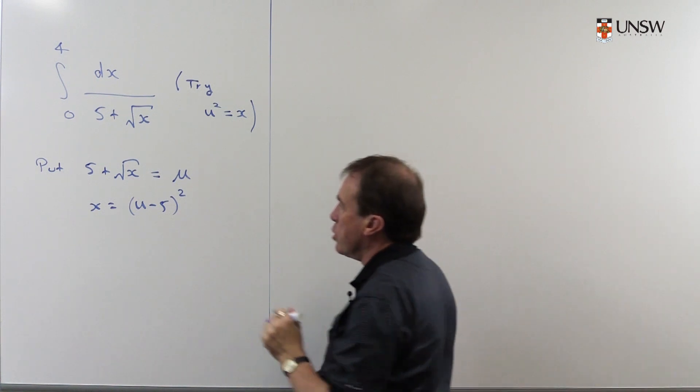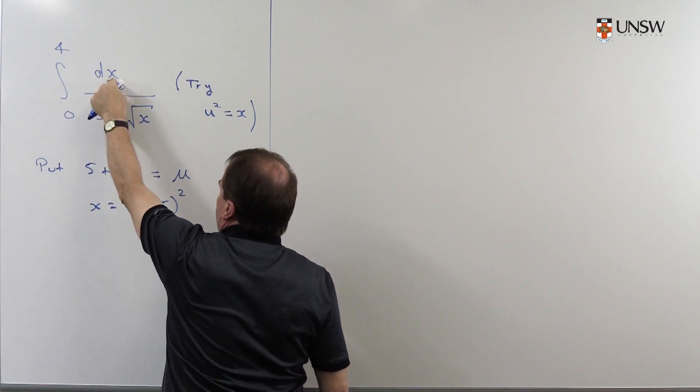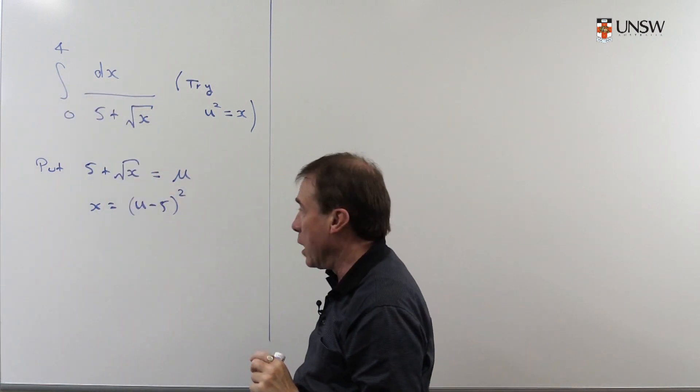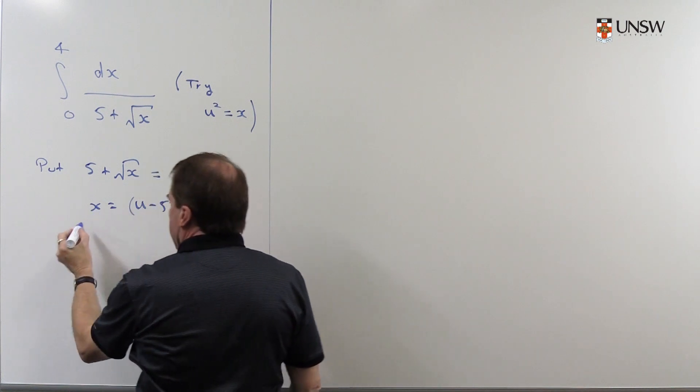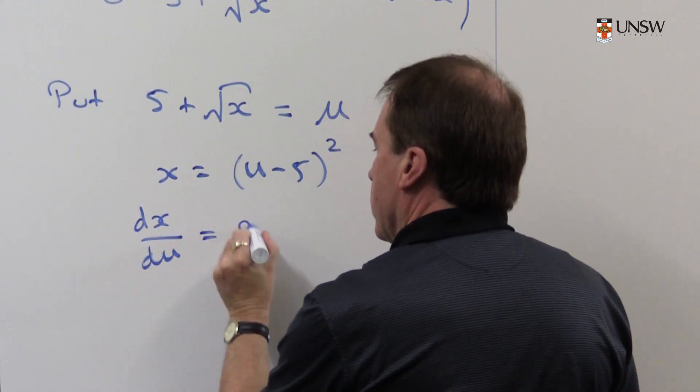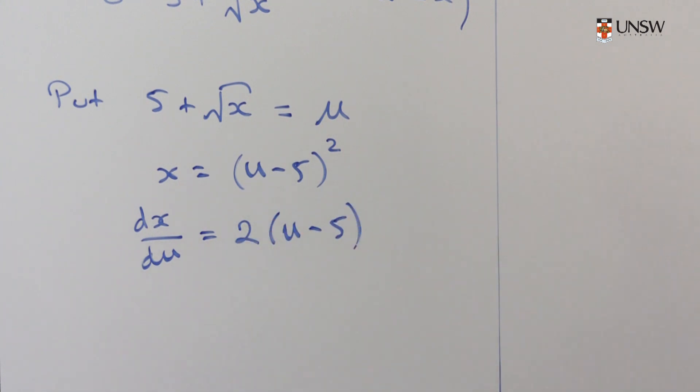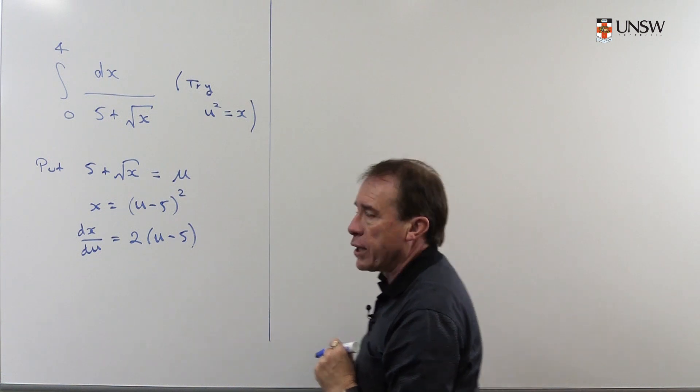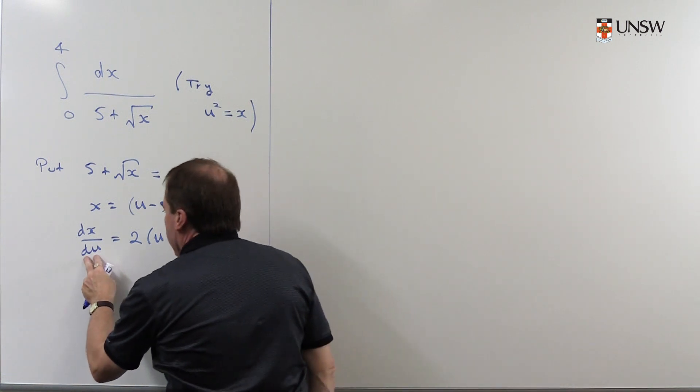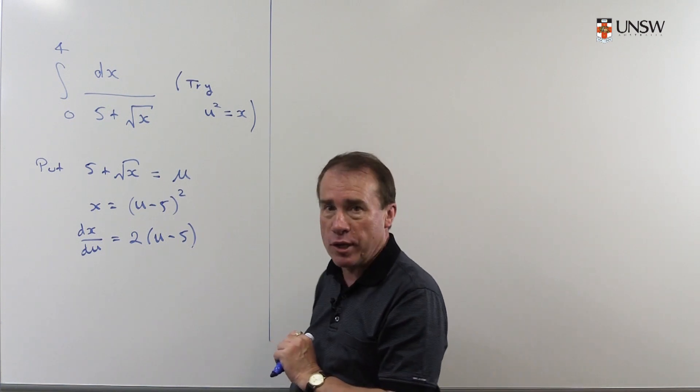And in order to substitute everything in, I can replace that with u. I can work out what the numbers are. I'm going to work out what the dx part here is. So I'm going to differentiate both sides of this with respect to u. So I get 2 brackets u minus 5 and you can sort of think of pulling the du up to there and thinking of dx is 2u minus 5 du.